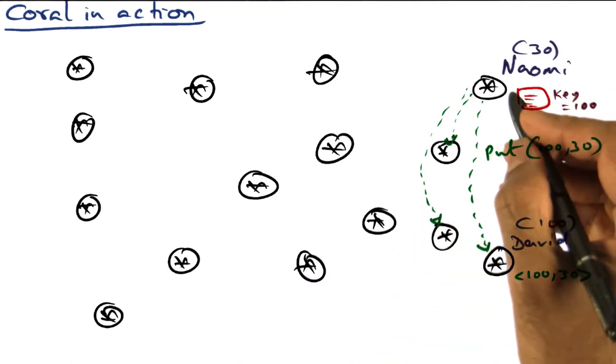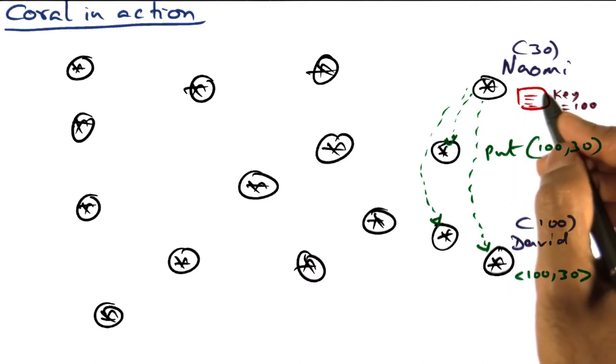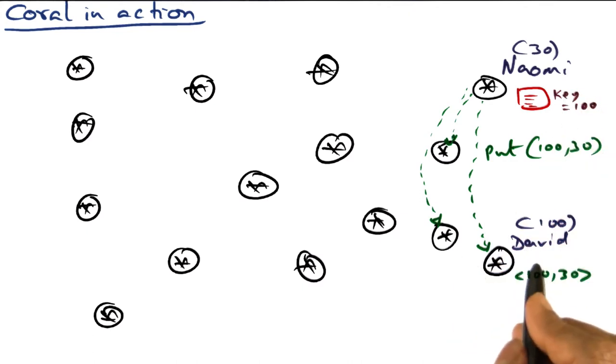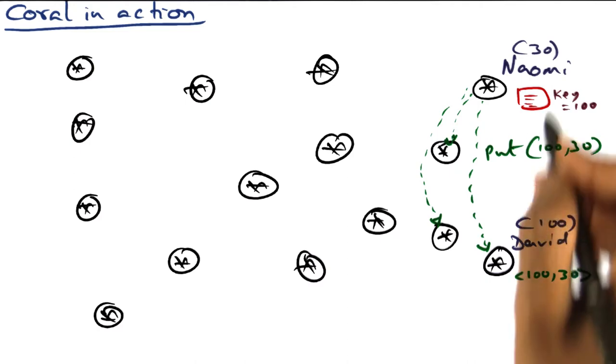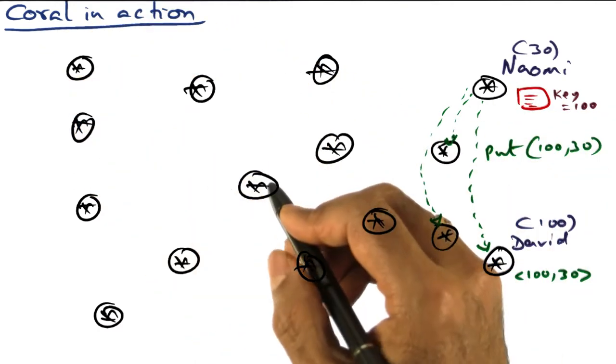And so she uses the Coral system, and she uses the Coral key base routing. The node that she would like to store this key 100 is node 100, corresponding to David's computer, because David's computer has node ID 100, so that's the place I would like to keep it. But we are following the Coral's key base routing algorithm.